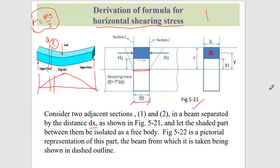For a rectangular section, the stress diagram shows compression on one side and tension on the other. If you consider above the neutral axis, you get the stress diagram for that portion. The total force H is the horizontal force due to the bending moment acting on the cross section.